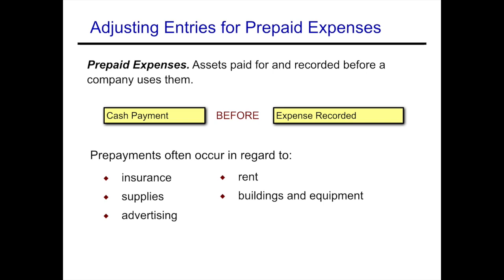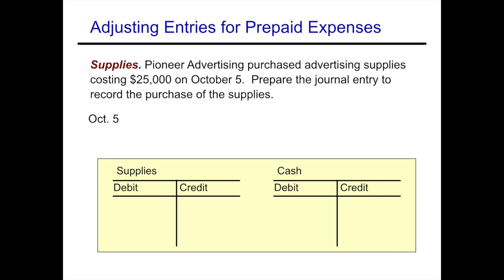Let's look at some examples, starting with supplies. Pioneer Advertising purchased advertising supplies costing $25,000 on October 5th. We need to prepare the journal entry to record the purchase. This is not an adjusting entry — it's just recording the purchase. We're getting supplies and paying cash, so we debit supplies for $25,000 and credit cash, then post that journal entry to the ledger.